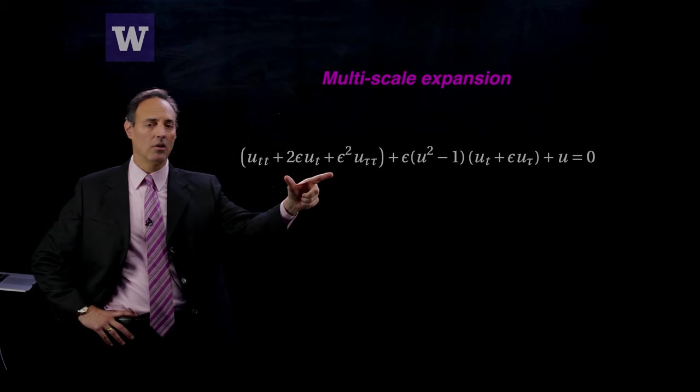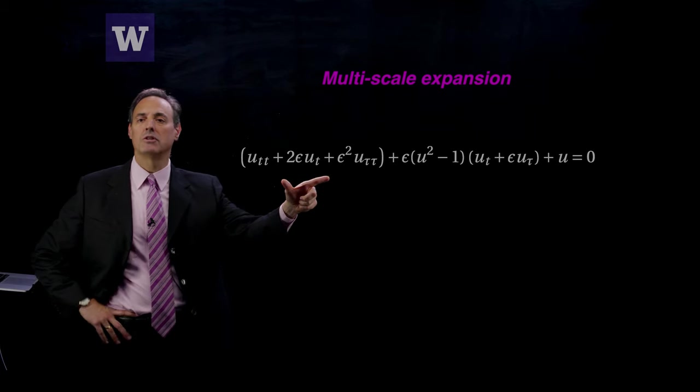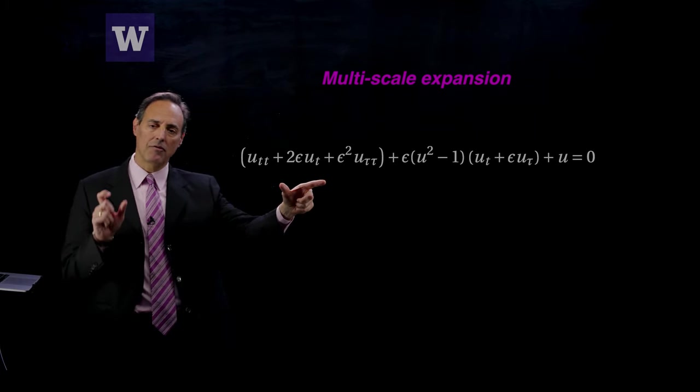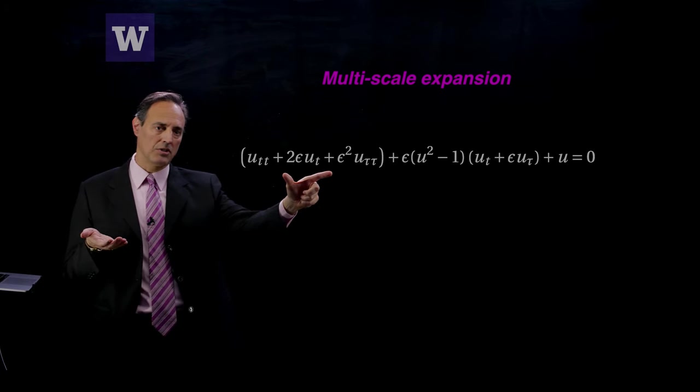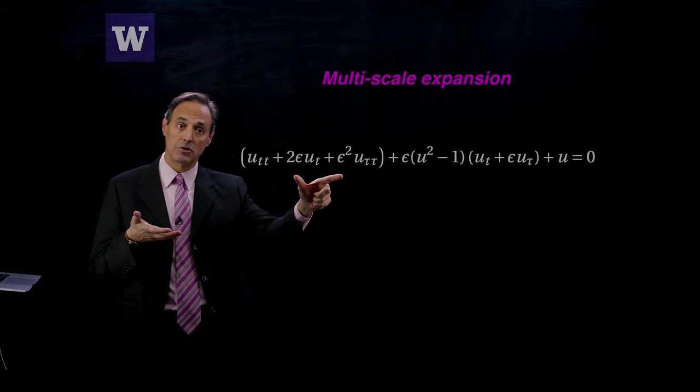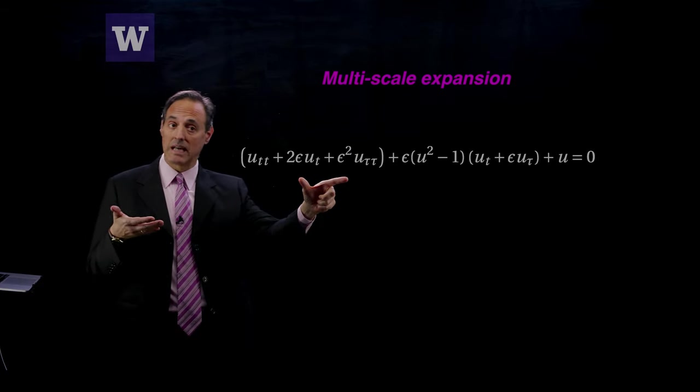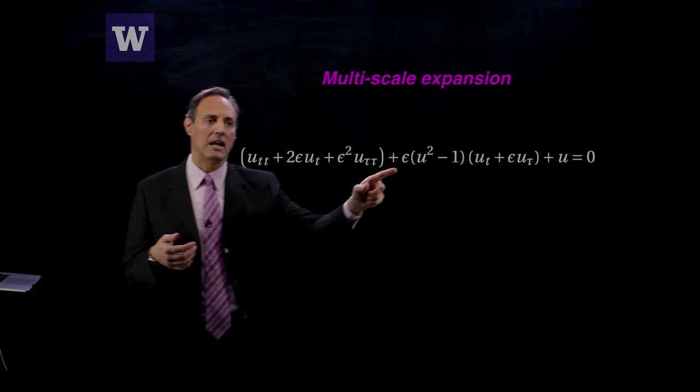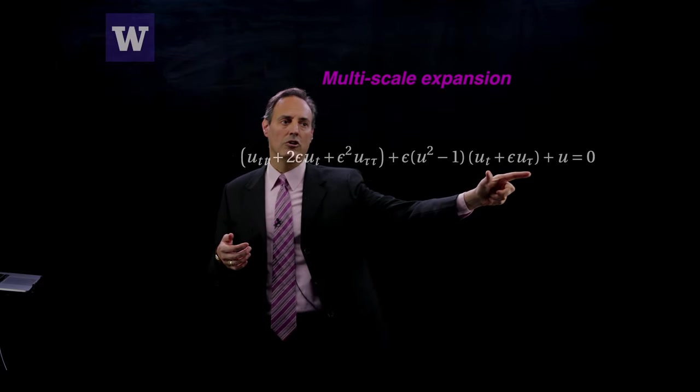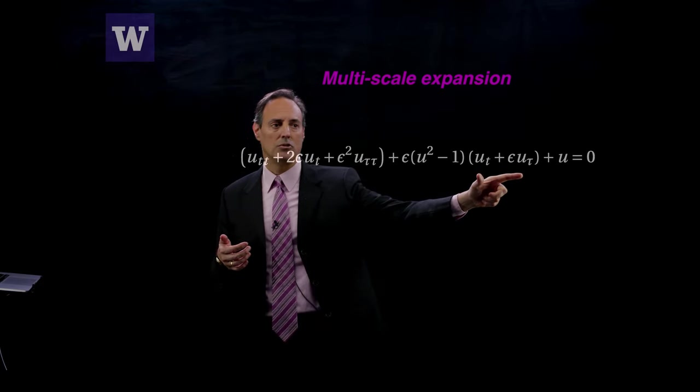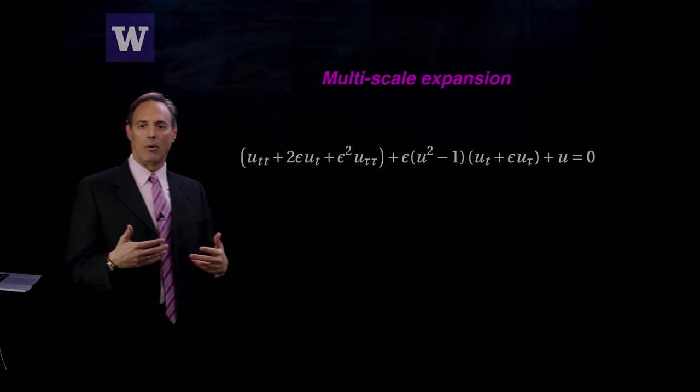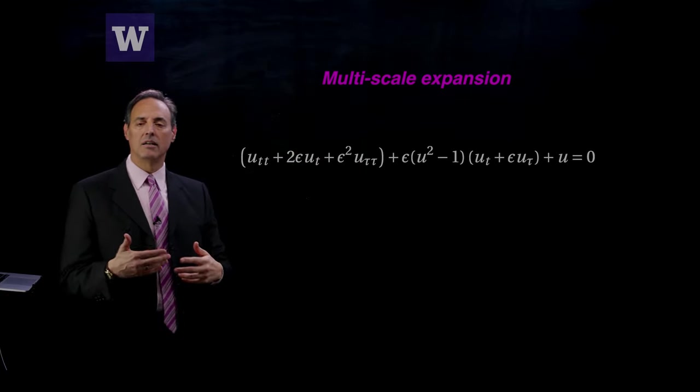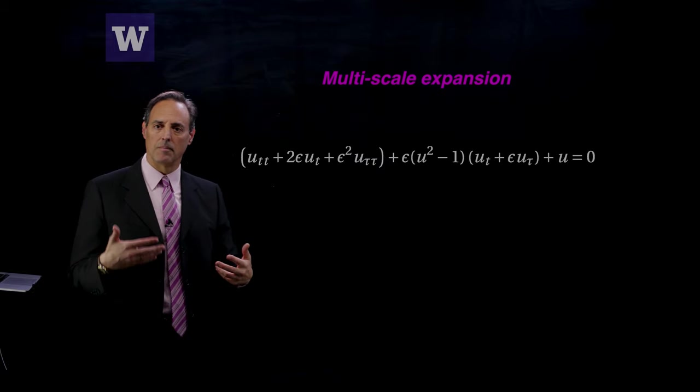u is no longer a function of t, it is a function of t and tau. I have to accommodate for that change of variables using chain rule, and here's what the second derivative looks like for u_tt. It becomes a function of t and tau, plus epsilon(u^2 - 1) times the first derivative u_t plus epsilon u_tau plus u. This is the van der Pol written in the two time scale system, t and tau.